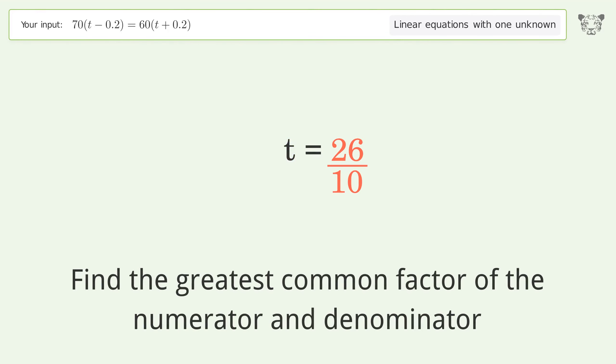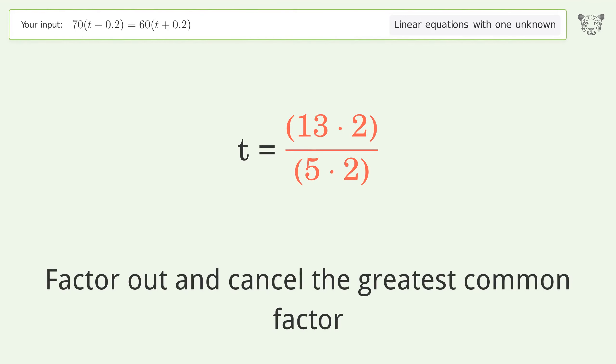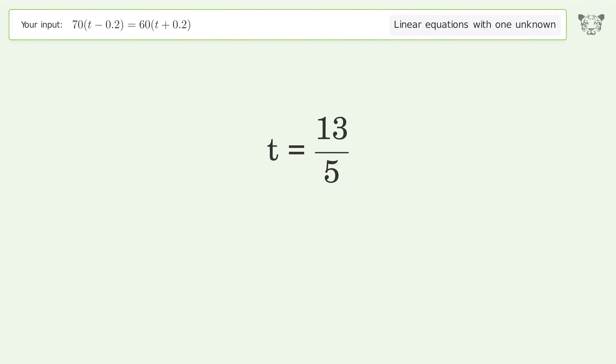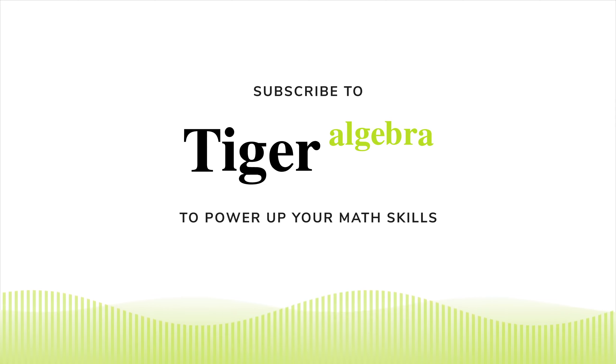Find the greatest common factor of the numerator and denominator. Factor out and cancel the greatest common factor. And so the final result is t equals 13 over 5.